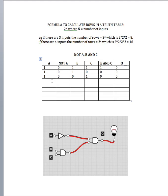Now let's turn A still to 1, but B to 0 and C to 0. We know if A is 1 then its NOT output will be 0. And if B and C are both 0, the AND gate output will be 0, so our ultimate output will be 0.